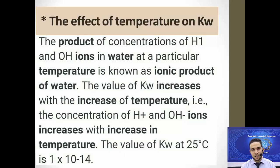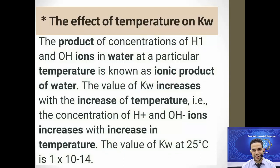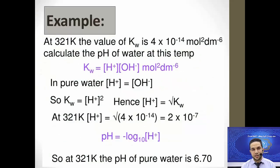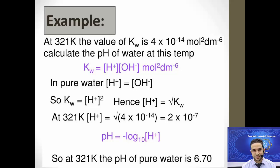Temperature is the only factor that can change the value of Kw. The relationship is direct: as temperature increases, Kw also increases. At 25°C it is constant at 1×10⁻¹⁴. For example, if we increase the temperature from 298 K to 321 K, the value of Kw becomes 4×10⁻¹⁴.